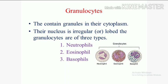Granulocytes contain granules in the cytoplasm. The nucleus is irregular and lobed in granulocytes. According to their staining characteristics, they are divided into three types: one, neutrophils; two, eosinophils; three, basophils.